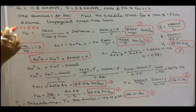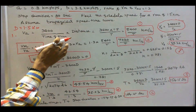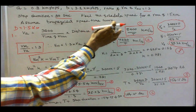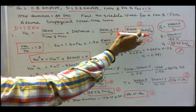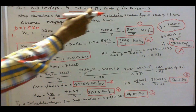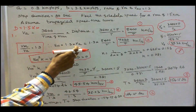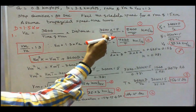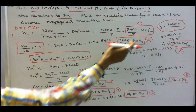First, find the average speed: va equals 3600 divided by time of run T into distance d, that is 3600 into 1.5 divided by T, giving 5400 divided by T in km per hour. Since vm over va equals 1.3, vm equals 1.3 times va, which equals 1.3 times 5400 over T, that is 7020 divided by T in km per hour.